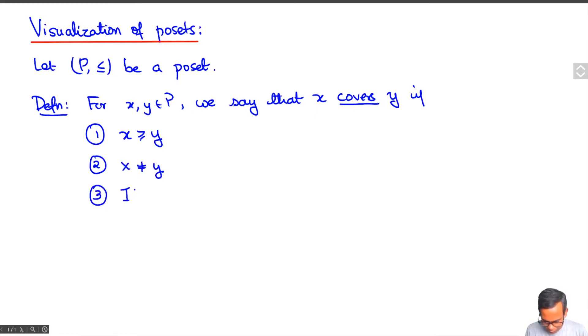In other words, if x is greater than or equal to z and z is greater than or equal to y for some z in P, then x is equal to z or y is equal to z. So z has to be one of x and y. There is nothing strictly in between x and y.